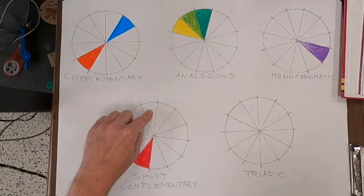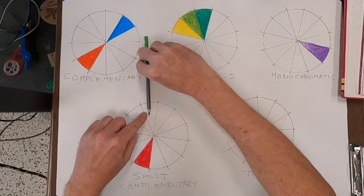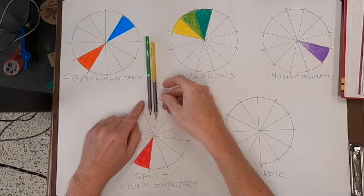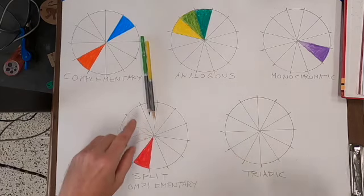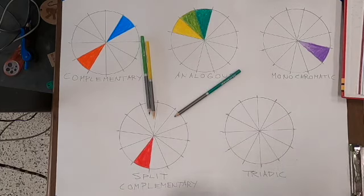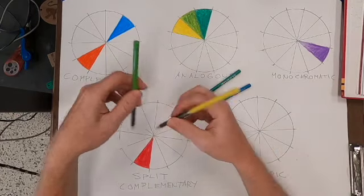All right, so complementary I went straight across. Split complementary I'm going straight across and I'm going to do these two next to it. So I got a yellow-green right there. I might need some yellow to mix in there with that. And then over here I got a blue-green. So I need some blue to mix in with that. Let's do this - put the yellow down first.